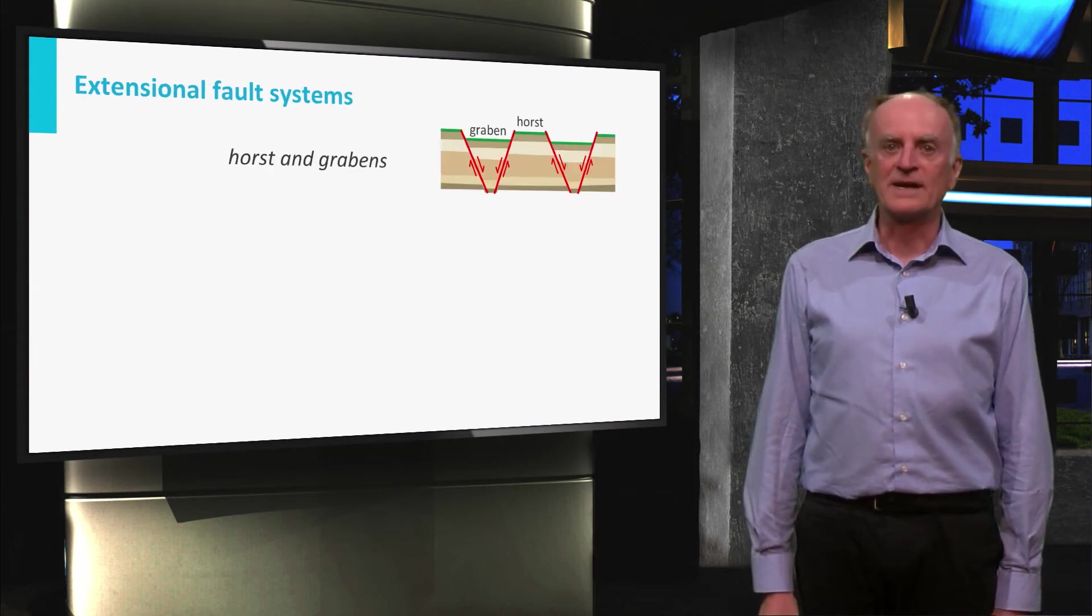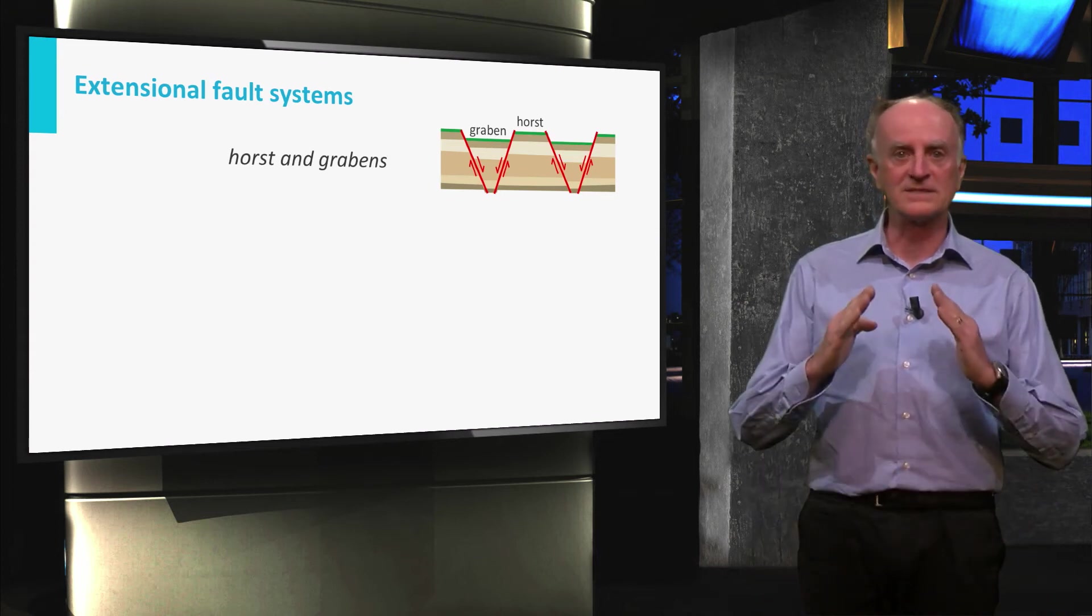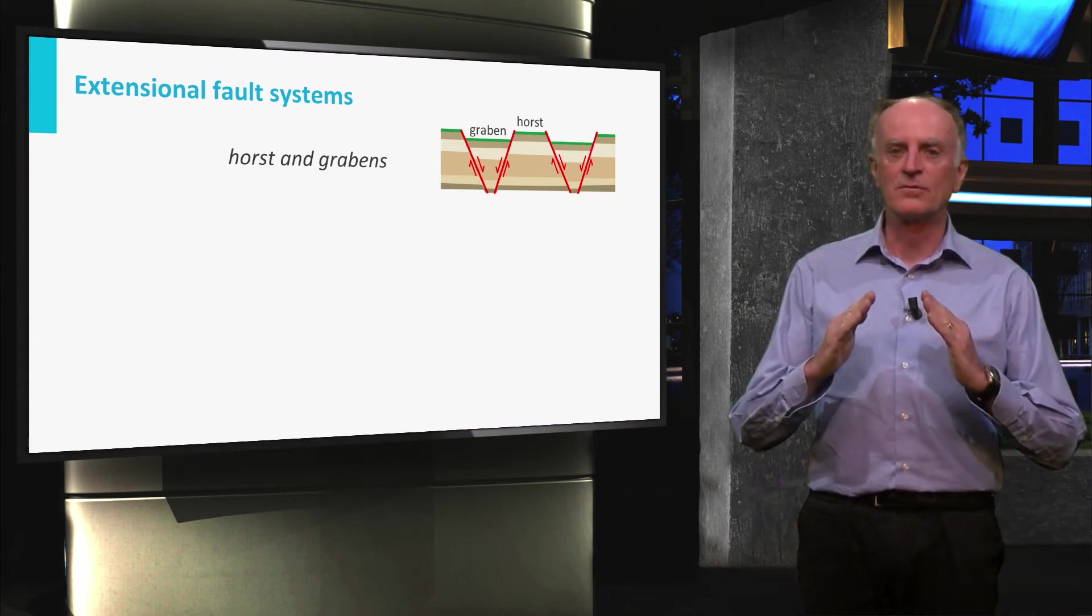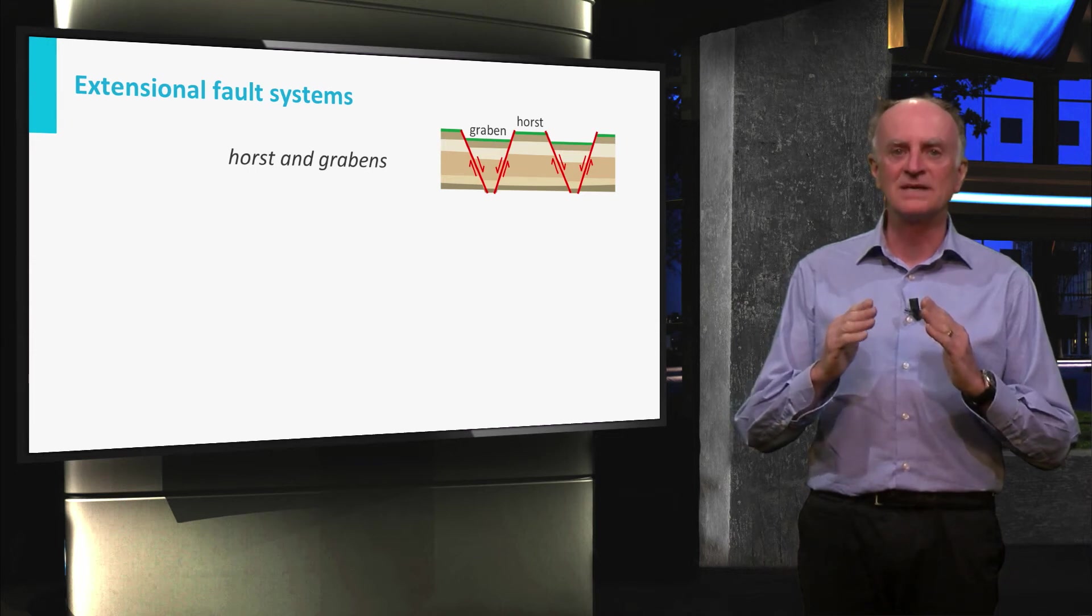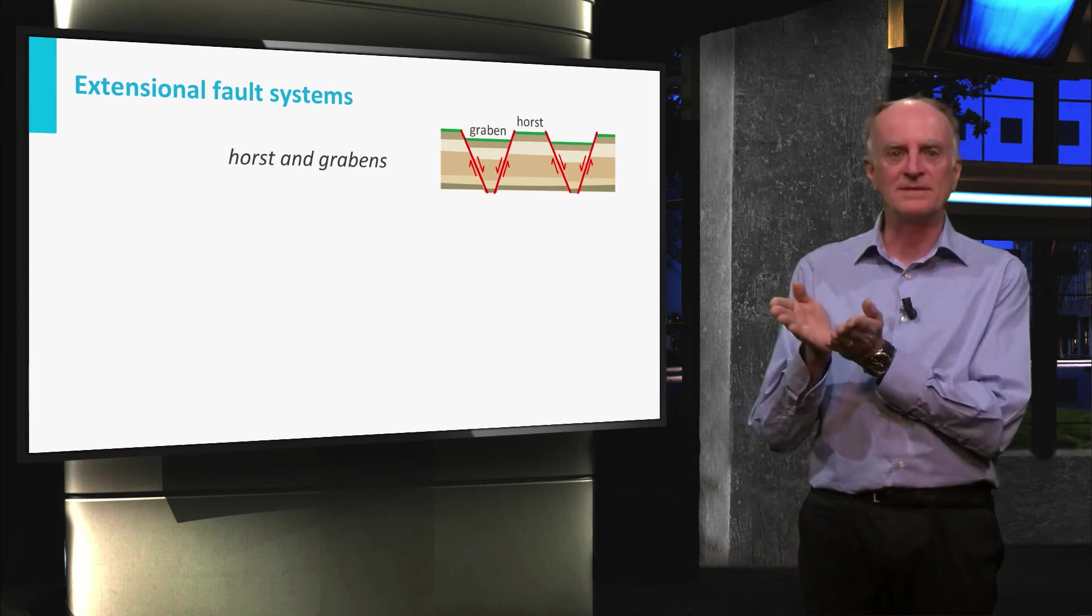Faults rarely come alone and form rather a fault system. Normal faults appear often in pairs with opposing dips, forming a systematic angle of 60 degrees, defining Horst and Graben.